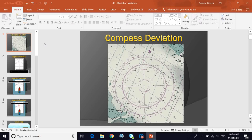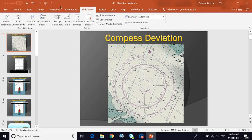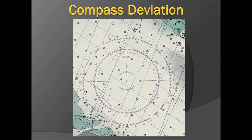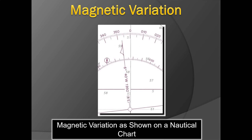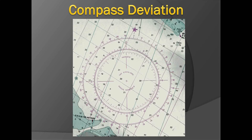This video explains the concept of compass deviation, how it occurs, and how it applies to a ship's magnetic compass and navigation. A ship has a magnetic compass which serves as a backup compass. The main compass for navigation is the gyro compass, which is connected to the autopilot for steering purposes. If the gyro compass fails for any reason, the ship has to use the magnetic compass for navigation.